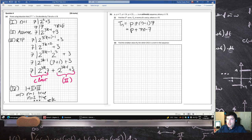Find the smallest value of p for which 2021 is a term in the sequence. So you want tn to be 2021. You want p plus 7n minus 7 to be 2021. p has to be a natural number. p will be 2028 minus 7n.